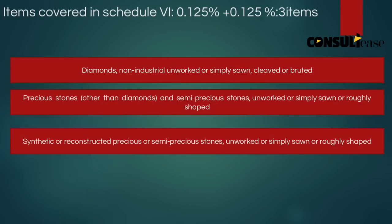Schedule 6 is the last schedule in the series and has a rate of 0.125% CGST each — meaning 0.25% total, which is 1/8%. Covered items include non-industrial, unworked, simply sawn, cleaved or bruted diamonds, as well as other precious stones not covered in previous entries, and synthetic precious or semi-precious unworked or roughly shaped stones.